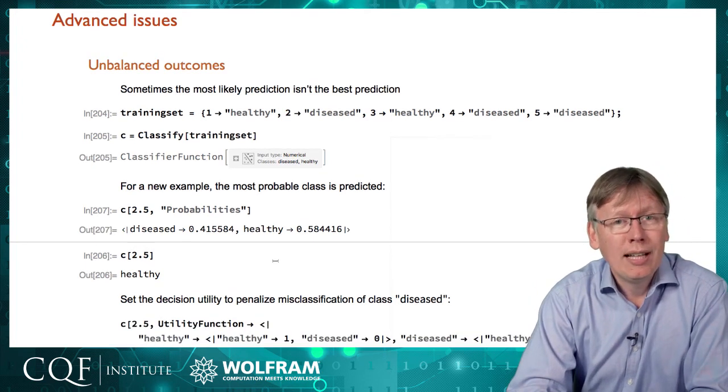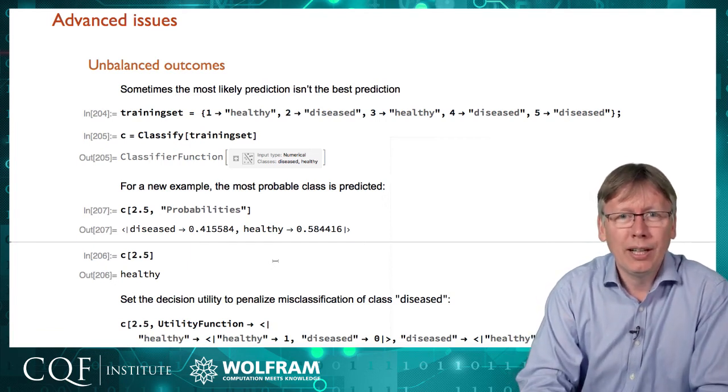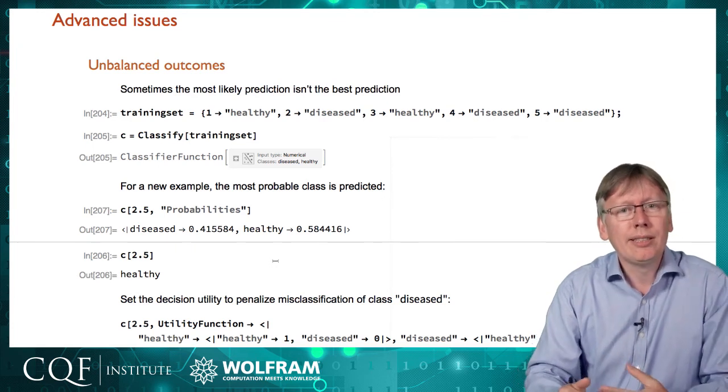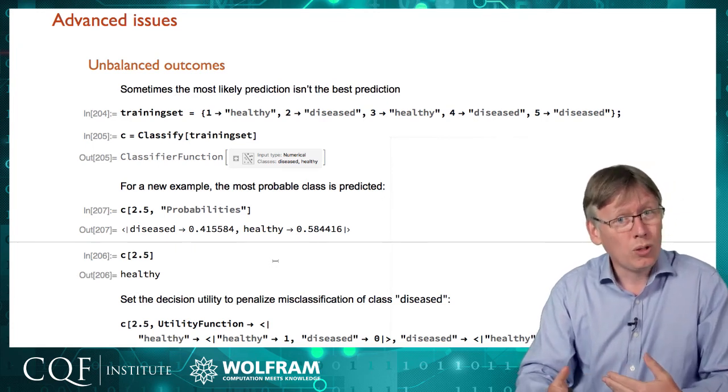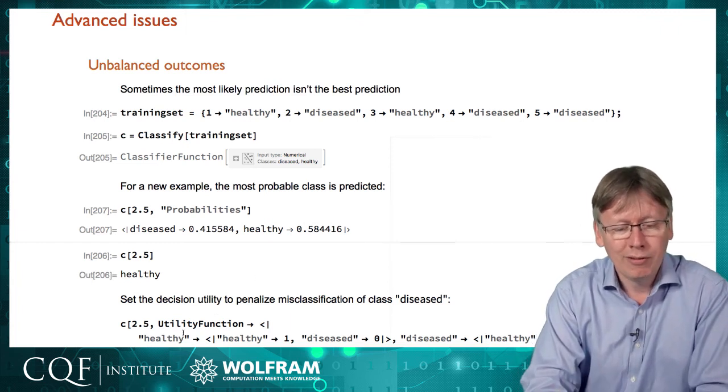And that's like attaching a score to each possible permutation of correct and incorrect predictions. So we've got two classes so we have four permutations we need to consider and so it goes up as a square of the number of classes.